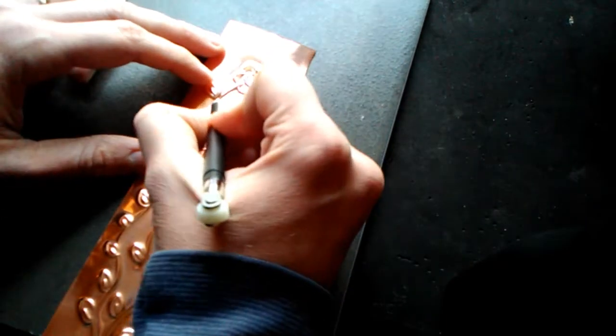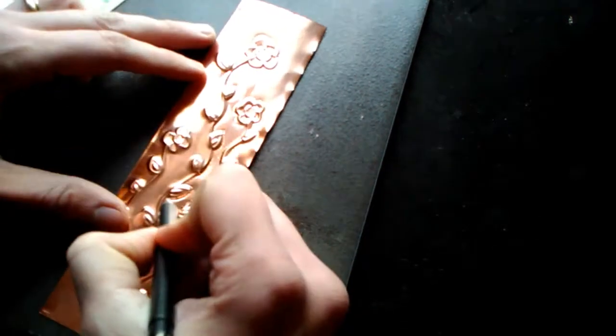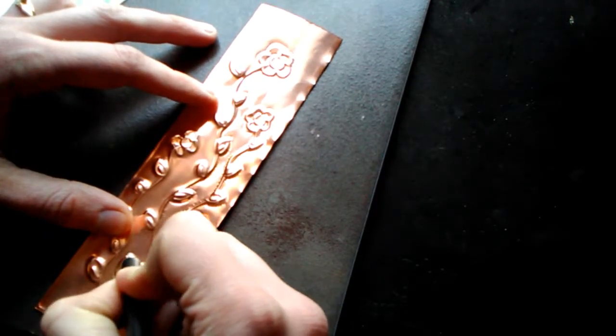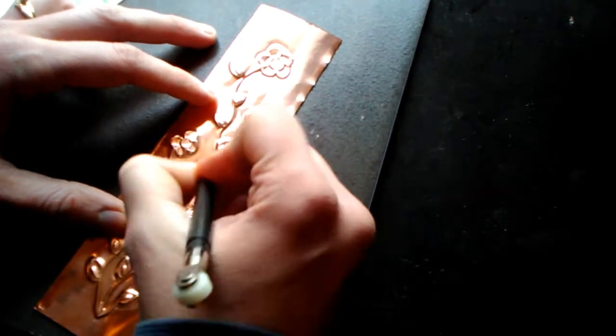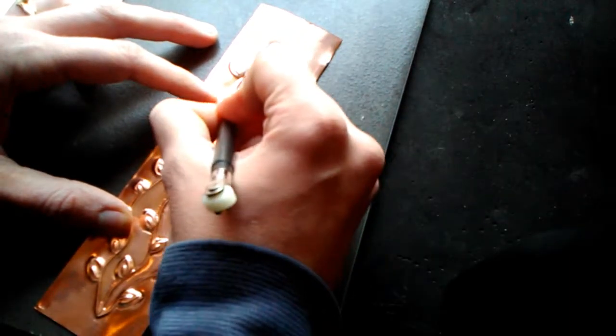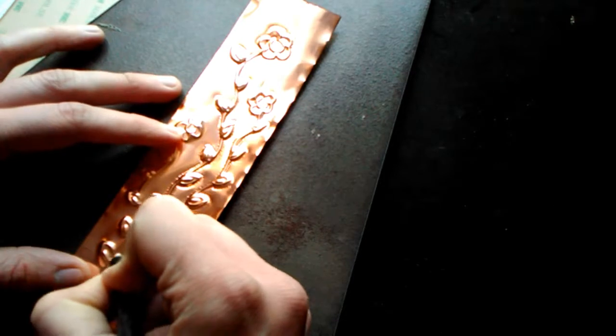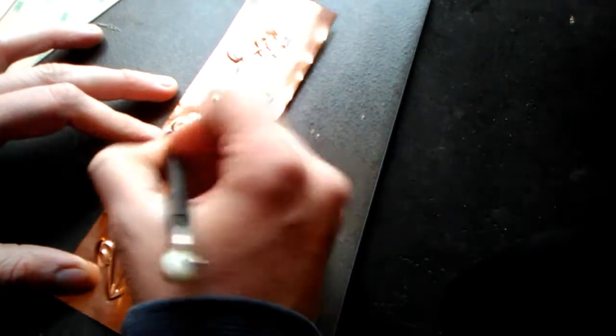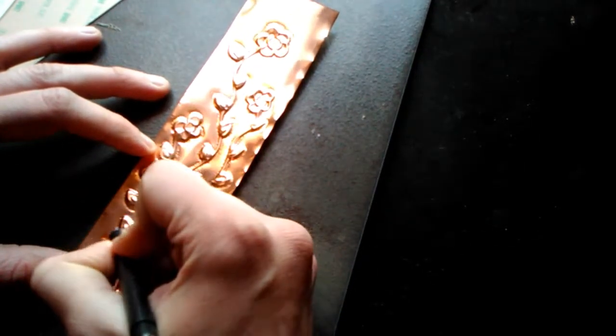Another thing you can do to this kind of design is you can give it background texture if you wish. Sometimes that's as simple as just using the tip of a sharpened wooden dowel and just putting little dots all around. You can also use a little wire brush, and that'll give it kind of a matte brushed metal effect. There's a whole lot of varieties to the different types of backgrounds you can do.